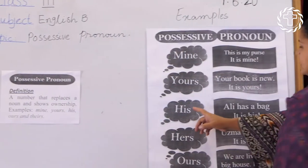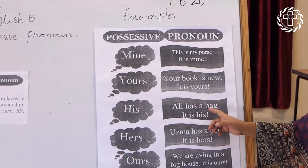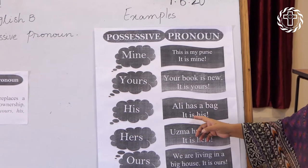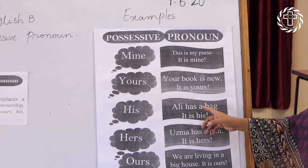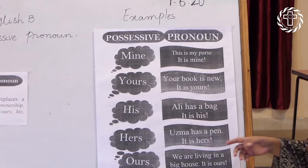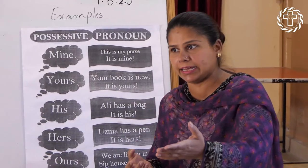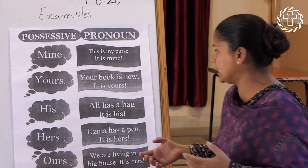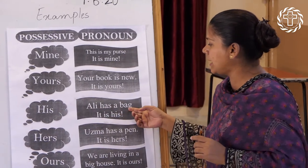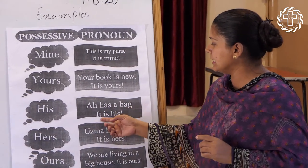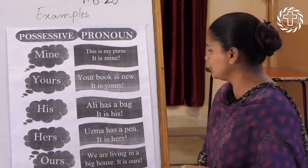His: Ali has a bag. It is his. Ali ke paas bag hai. Wa uska hai. Once again — his: Ali has a bag. It is his. Uska hai.